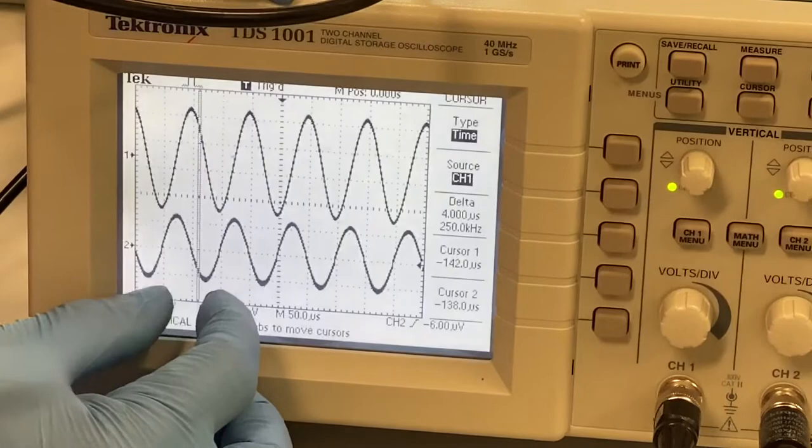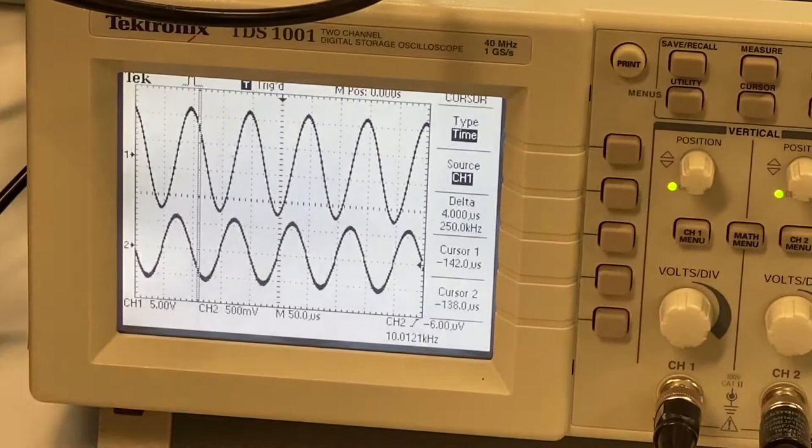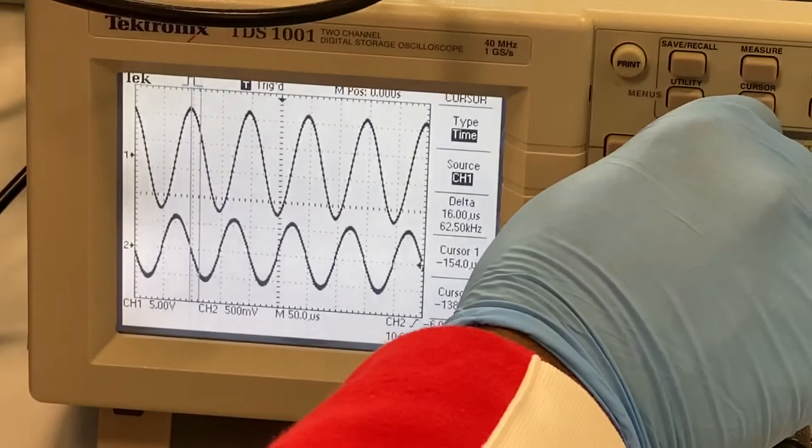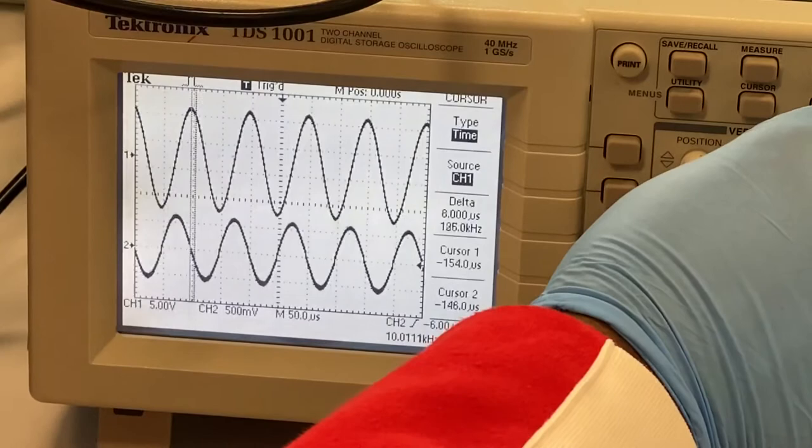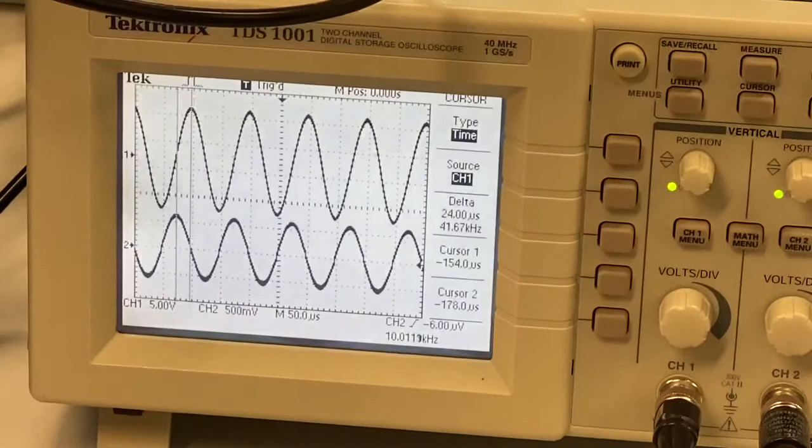Now we move cursor number one to the maximum of the input voltage. So we move cursor number one to the maximum of the input voltage. Then we move cursor number two to the maximum of the output voltage. There we go.